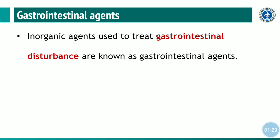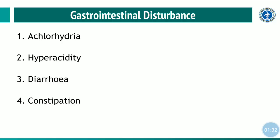Each organ has a definite functional role. In the event of impaired function of any organ, it is called a gastrointestinal disturbance. These consist of the following conditions: achlorhydria, hyperacidity, diarrhea, and constipation — diseases related to the GIT.